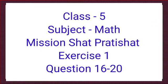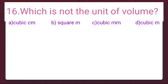Question number 16 is: which is not the unit of volume? The 4 options are — option A is cubic centimetre, option B is square metre, option C is cubic millimetres, and option D is cubic metres.